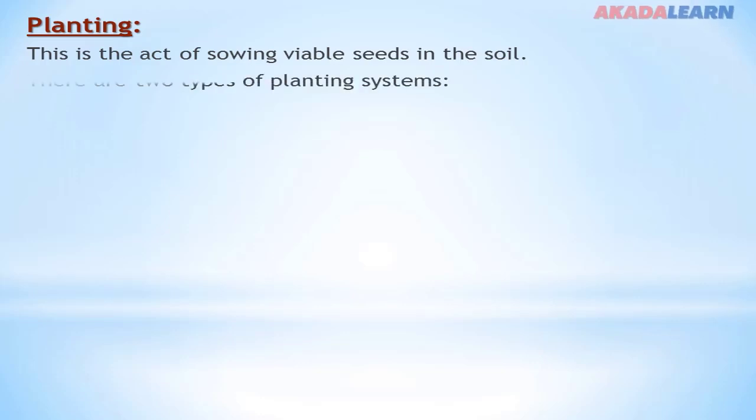Planting. This is the act of sowing viable seeds in the soil. There are two types of planting systems, just like we've discussed in crop propagation last time while we were on this platform. We have two types of planting systems.